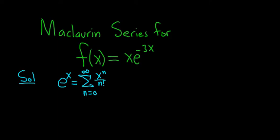So we have to come up with f(x) based off this formula. So first let's go ahead and replace x with -3x. So when we do that we get e^(-3x) equals and we still have the infinite sum as n runs from 0 to infinity.